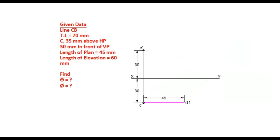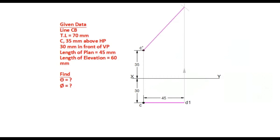Draw a projector through point D1. The elevation should have true length, so measure the true length of the line 70mm in the compass. From point C dash, cut an arc on the projector drawn through D1. This point is D1 dash. Line C dash D1 dash has true length and true inclination with HP. Measure this angle theta. While measuring, this angle is 50 degrees.